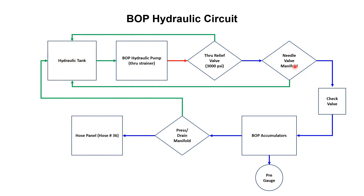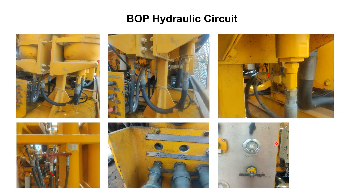From the needle valve, through the check valve, pressure comes to the accumulators. Four accumulators are installed in this power pack. Pressure comes to the first accumulator, then with the help of a T-fitting pressure comes to the second accumulator, then to the third accumulator, and then to the fourth accumulator. These are different pictures and different views for clarification — with the help of a T, flow comes towards the second accumulator, then to the third, and then to the fourth accumulator.